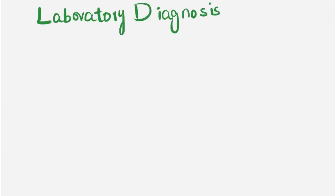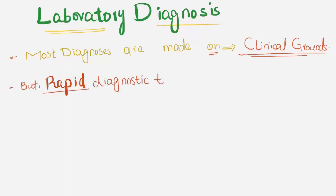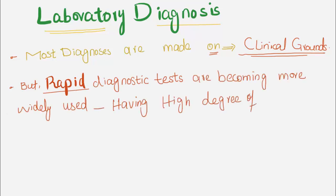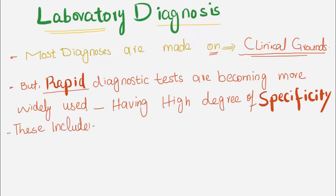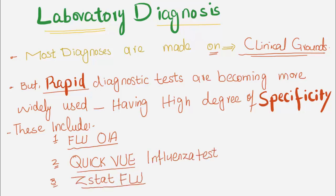Laboratory Diagnosis of Influenza: Most diagnoses of influenza are traditionally made on clinical grounds. But rapid diagnostic tests are becoming more widely used, with high degrees of specificity, including FLU OIA or Optical Immunoassay, and the QuickVUE Influenza Test.